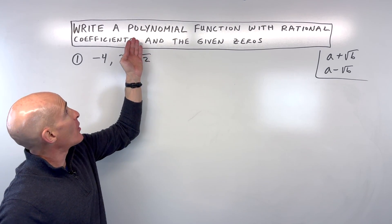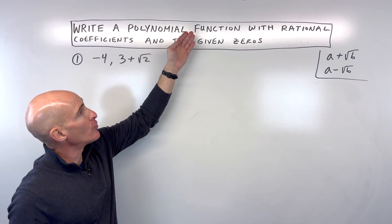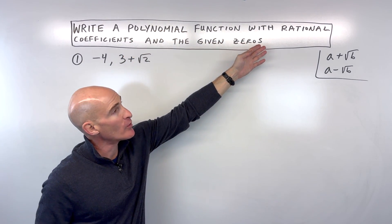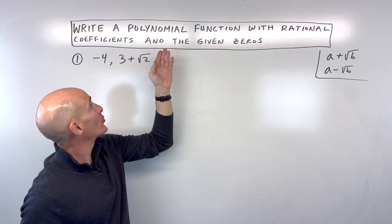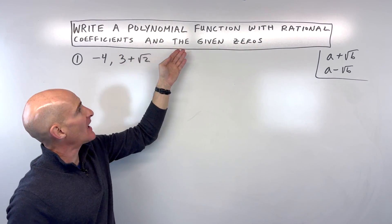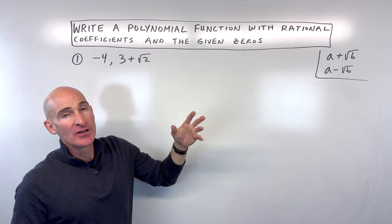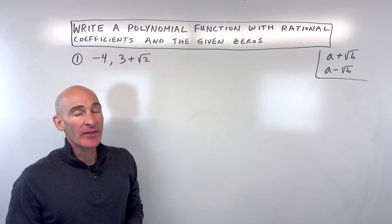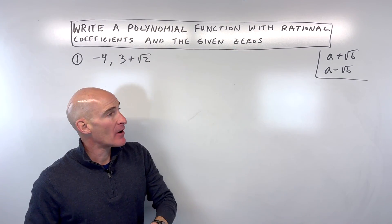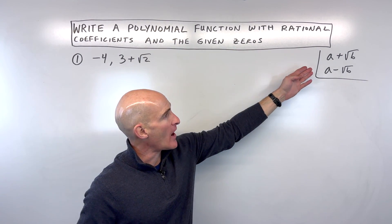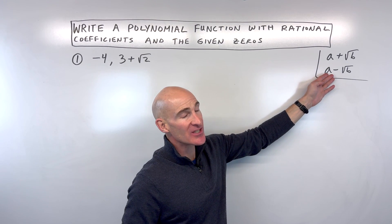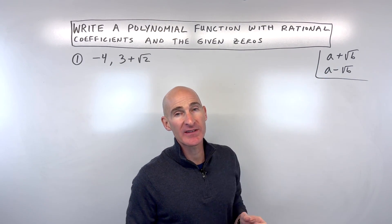In this video, we're going to talk about writing a polynomial function with rational coefficients and the given zeros. But before we do that, the first thing we want to talk about is the irrational conjugates theorem.